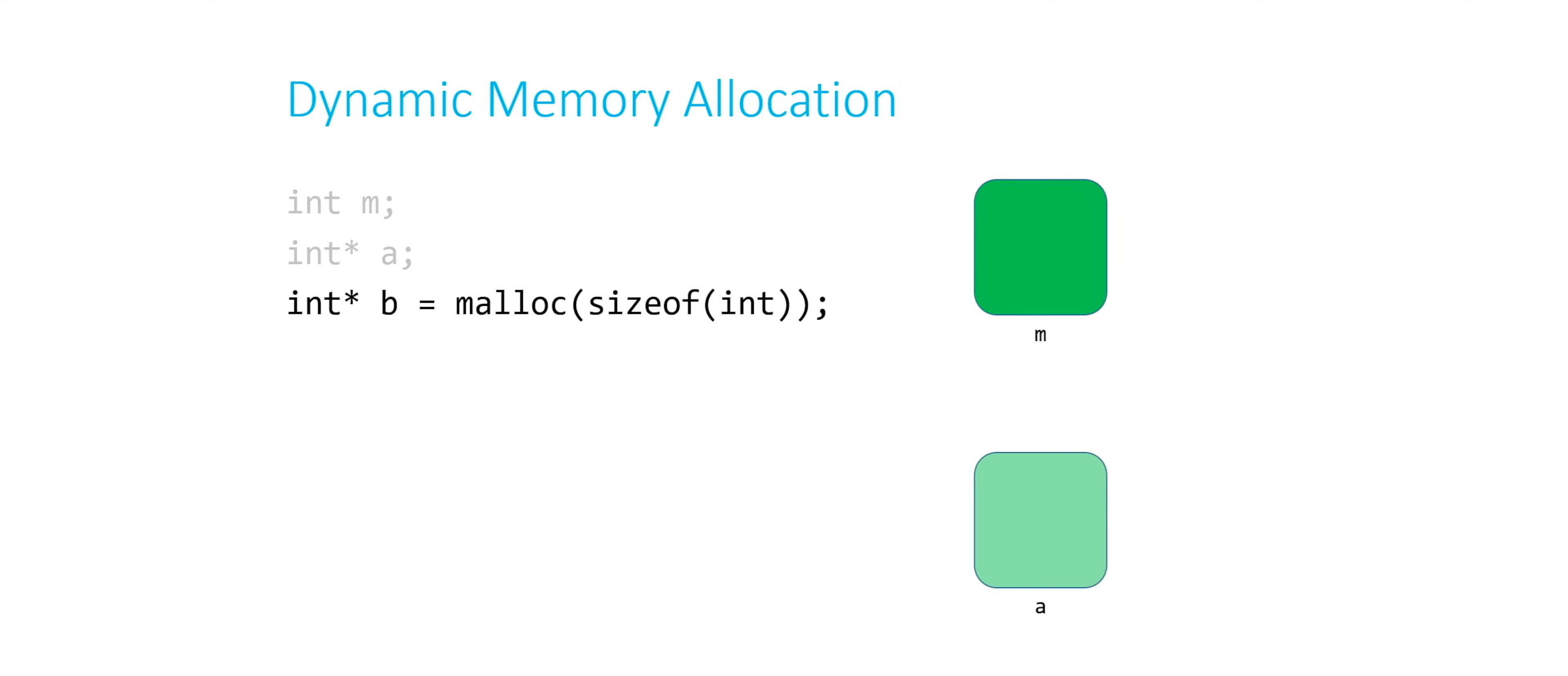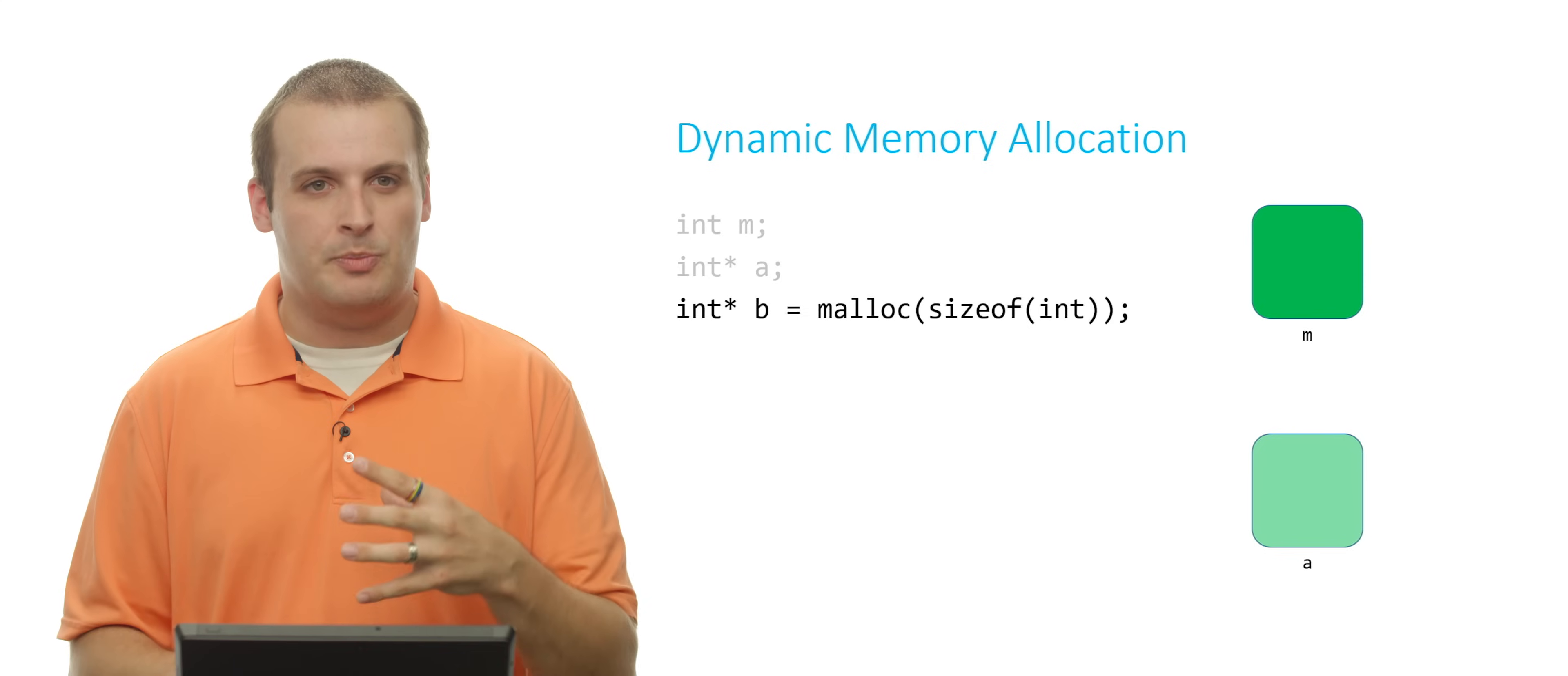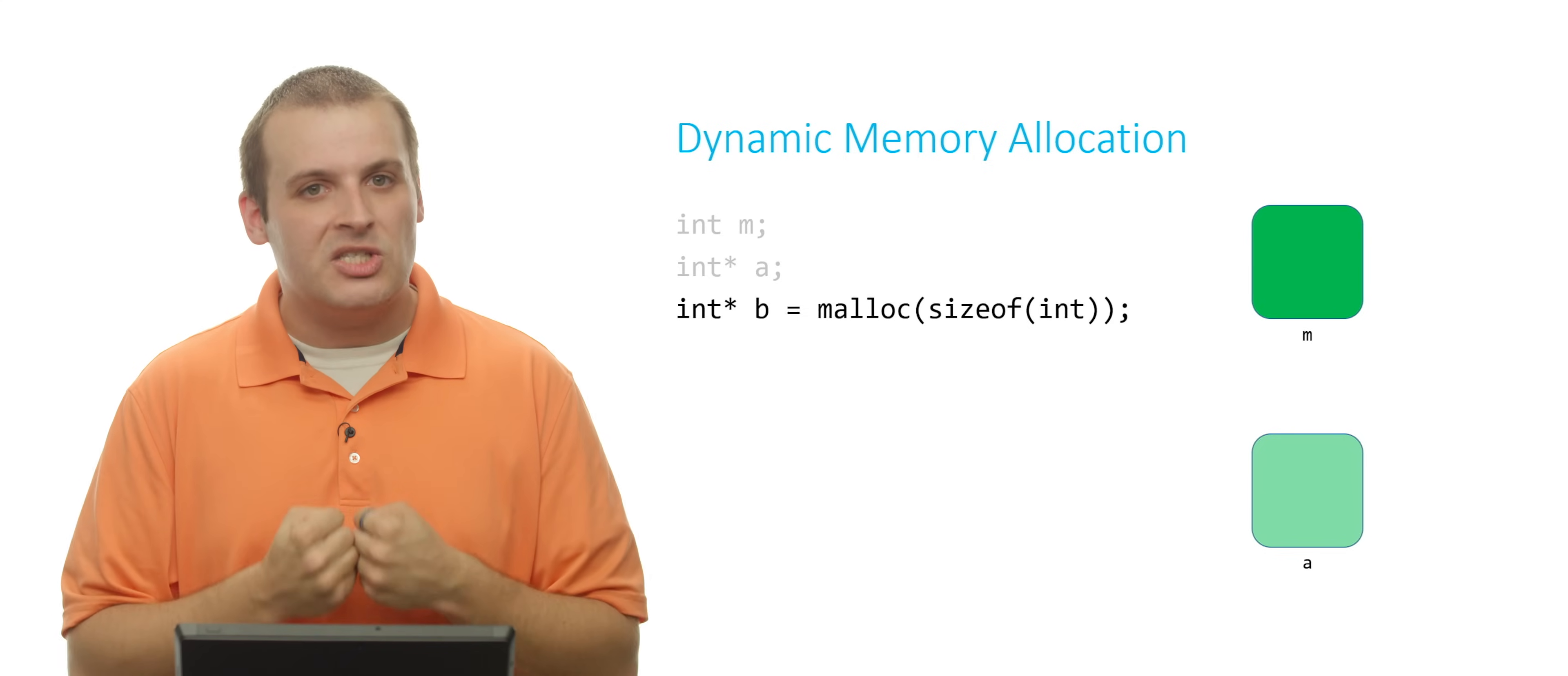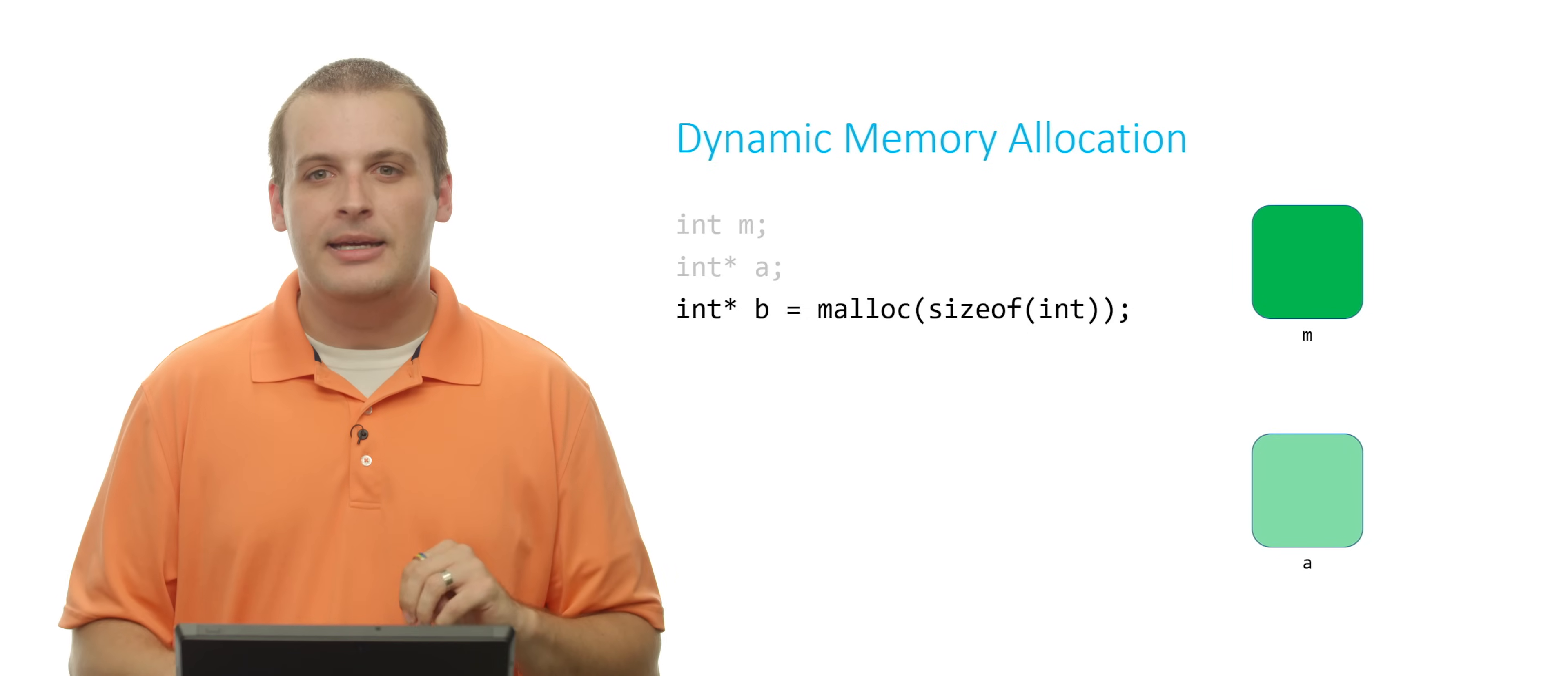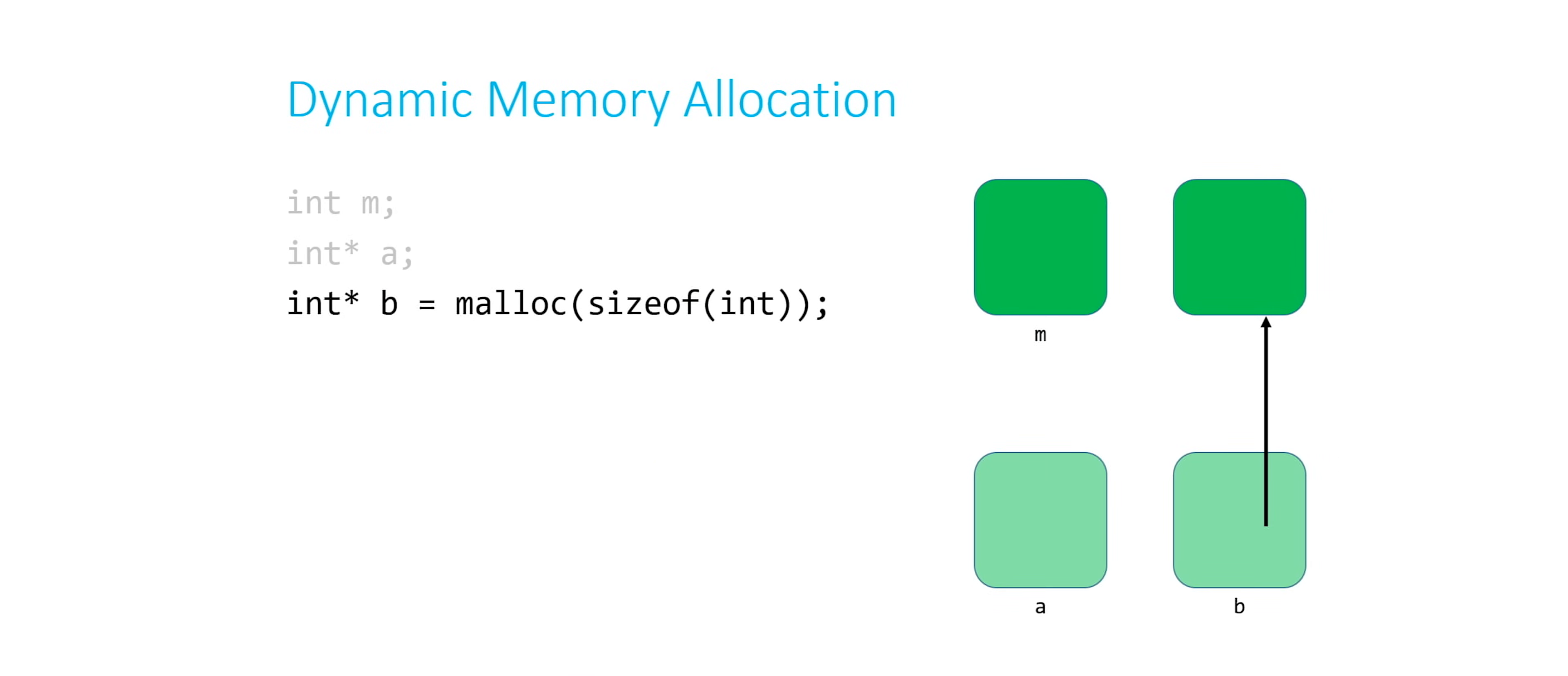Then I can say int star b equals malloc sizeof int. So what's going to happen here? Well, I'm going to have something called b that I'm giving a name to. So that's going to be sort of a light greenish box. And I'm asking malloc to dynamically give me one ints worth of space.